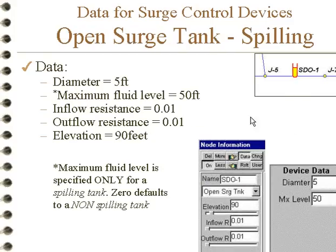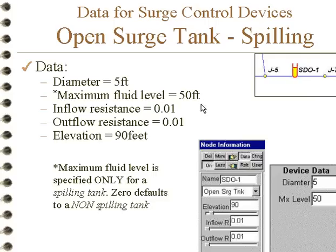An open surge tank has much less data. It just has the diameter of the tank and a maximum level. The maximum level converts this device to a spilling surge tank, and the level cannot go above that value — if it reaches 50 feet, the liquid will spill out. The resistances are based on the connections. If we put in a non-zero value for the maximum level, it will become a spilling surge tank.